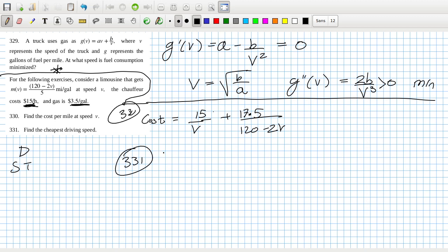The cheapest driving speed. So the derivative of the cost would be minus 15 over v squared minus 17.5 over 120 minus 2v squared. Bring down the power, reduce the power by one, and multiply by the inside derivative, which is 2. So 17.5 times 2 is 35, and we want that to equal 0.